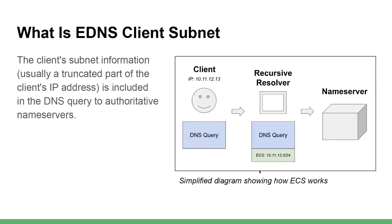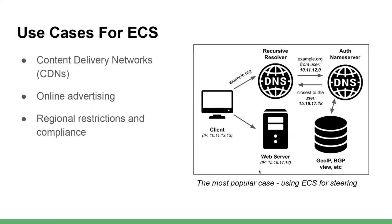Fortunately, there is a solution to this problem, and it's called eDNS client subnet, or ECS. The design of this feature is simple: the client subnet is included in the DNS query to name servers. And now when the name server sees this ECS extension, it can use it and disregard the IP address it received the query from, making a decision based on the subnet from the ECS extension. The most popular use is geosteering, and it's used by virtually all CDN providers out there.